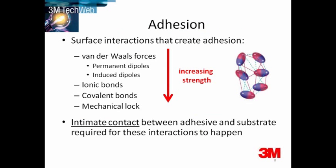It's fundamental to get good adhesion. Surface interactions between the adhesive and the substrate create adhesion. The same forces that hold materials together also impact and help create adhesion forces. Intermolecular forces are key to understanding this. For these to be effective, intimate contact between adhesive and substrate is required.